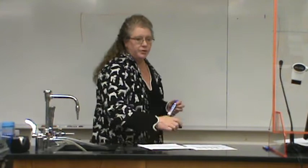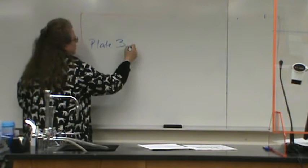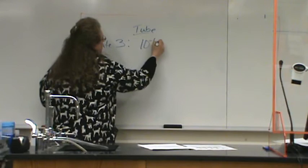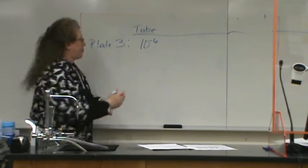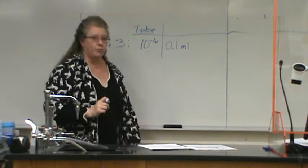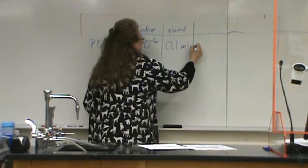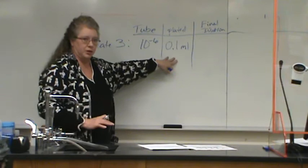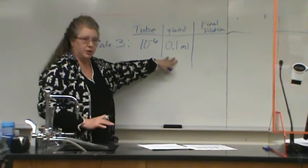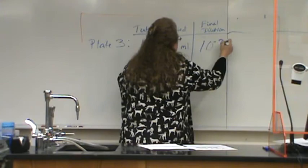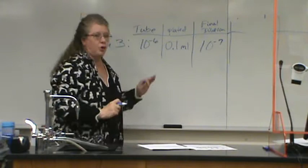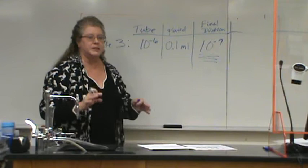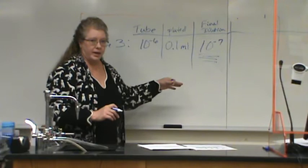For plate three, you had a 10 to the negative 6th tube dilution, and you plated 0.1 mL. That means your final dilution is 10 to the negative 7th. We know we need to multiply the number of colonies we count by that dilution factor. So we need to figure out what 10 to the negative 7th equals as a fraction.